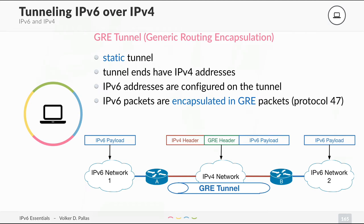The IPv6 payload — the IPv6 packet, maybe trying to access some website — is sent to the router. The router attaches a GRE header and an IPv4 header and sends the packet to router B. The IPv4 header is removed, then the GRE header is removed, and the IPv6 payload is placed on the cable and is reachable by the destination.